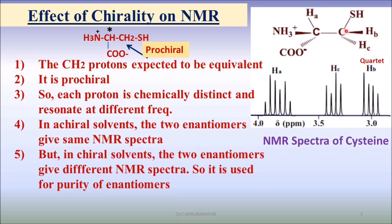The methylene carbon atom is pro-chiral. If you look at the 3D structure, the methylene protons are not chemically identical — they are chemically distinct and therefore resonate at different chemical shift values, as you see here. For example, the Hβ proton couples with the Hα proton because they are not chemically equivalent. They are magnetically non-equivalent, and it further couples with the HA proton to give a tetrad.